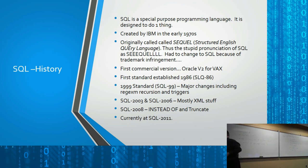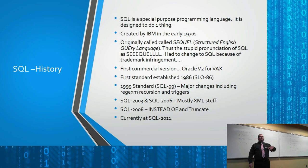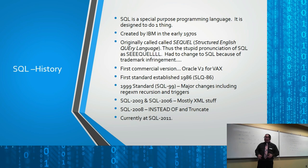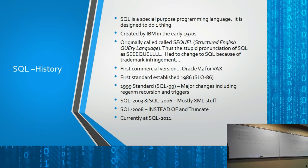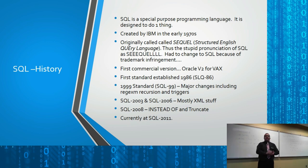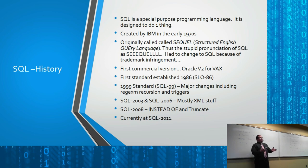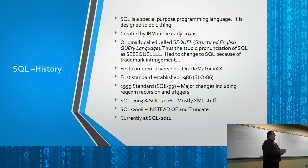In 2008, they officially added the TRUNCATE command — all servers already had it as a de facto command, but they finally made it part of the standard. There's also something called 'instead of' which is part of triggers — I'll discuss that when we cover triggers. Currently we're at SQL 2011, which adds window functions and other features mainly for data warehousing — no real purpose unless you're dealing with tens of millions of rows, which you won't be in this course.